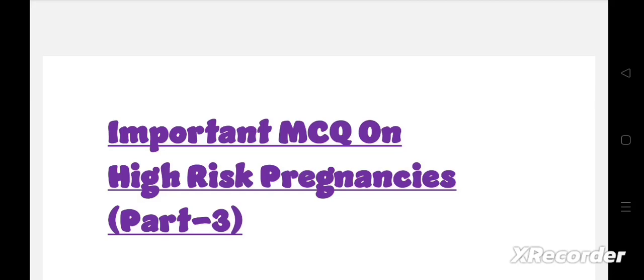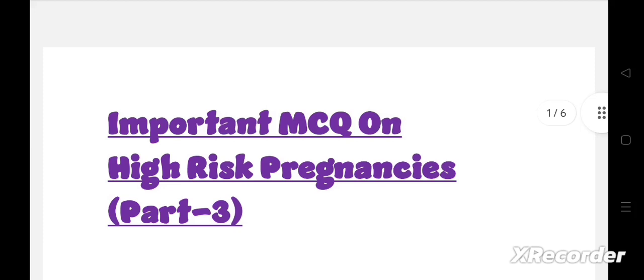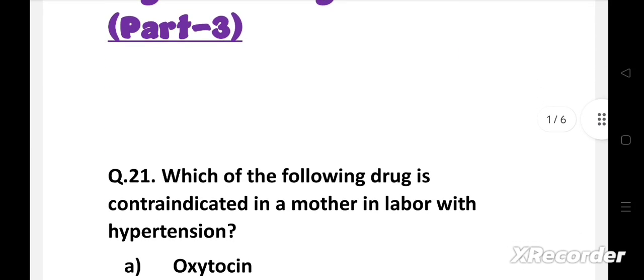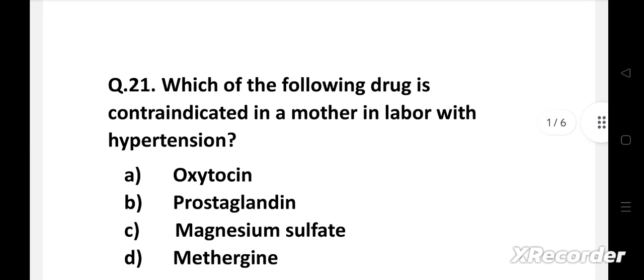Hello everyone, welcome to my another video. Today we discuss important MCQs on high-risk pregnancies. For more important MCQs on nursing subjects, make sure you subscribe to this channel. Question number 21: Which of the following drug is contraindicated in a mother in labor with hypertension? Option A: Oxytocin, B: Prostaglandin, C: Magnesium sulfate, D: Methergine.